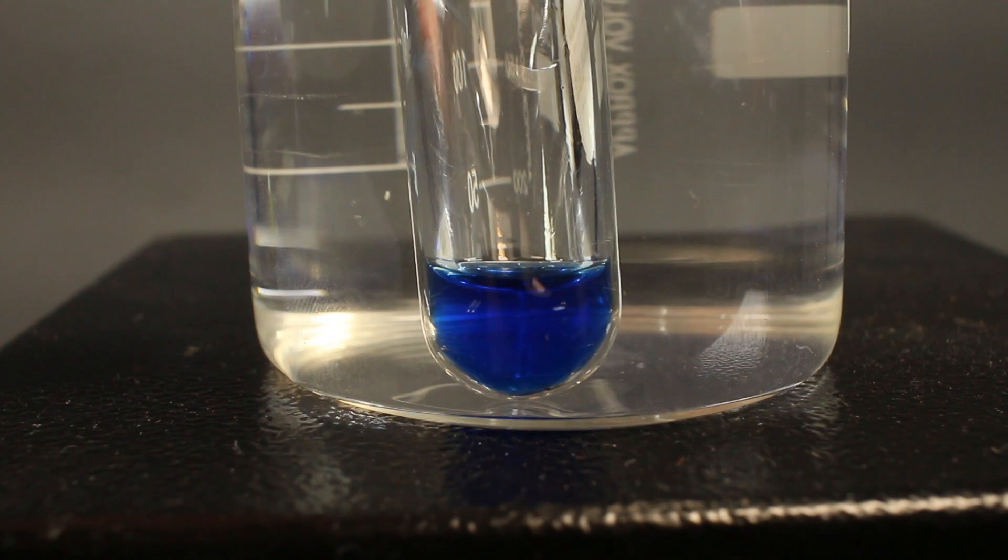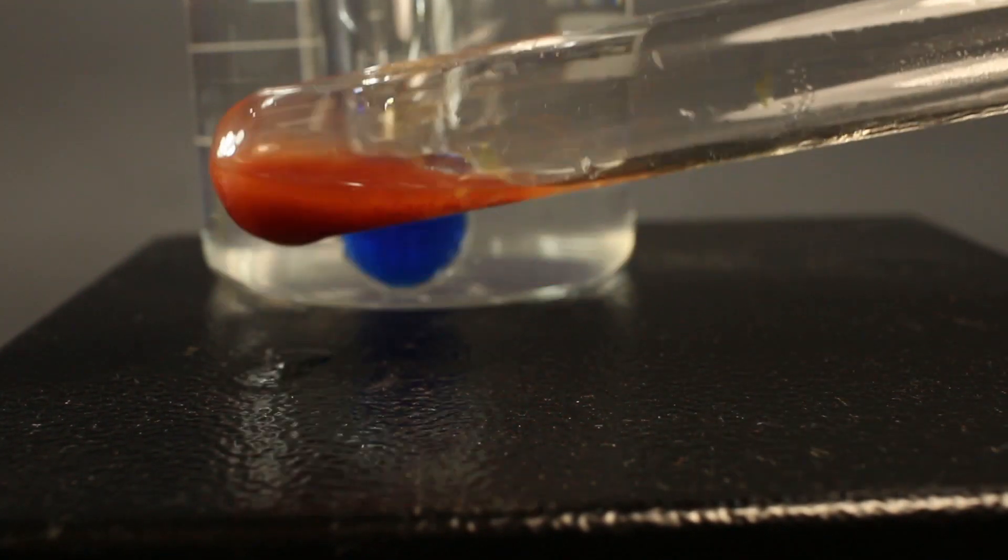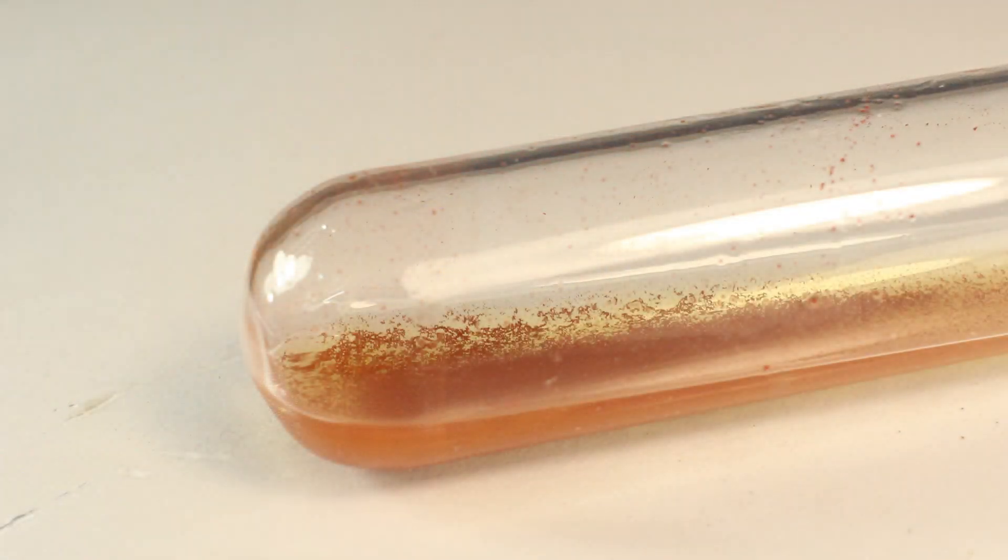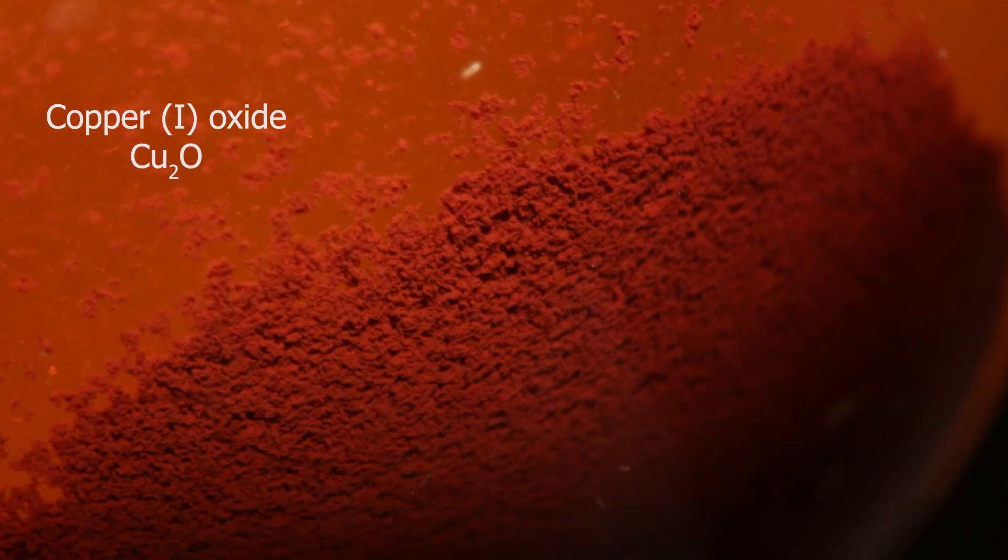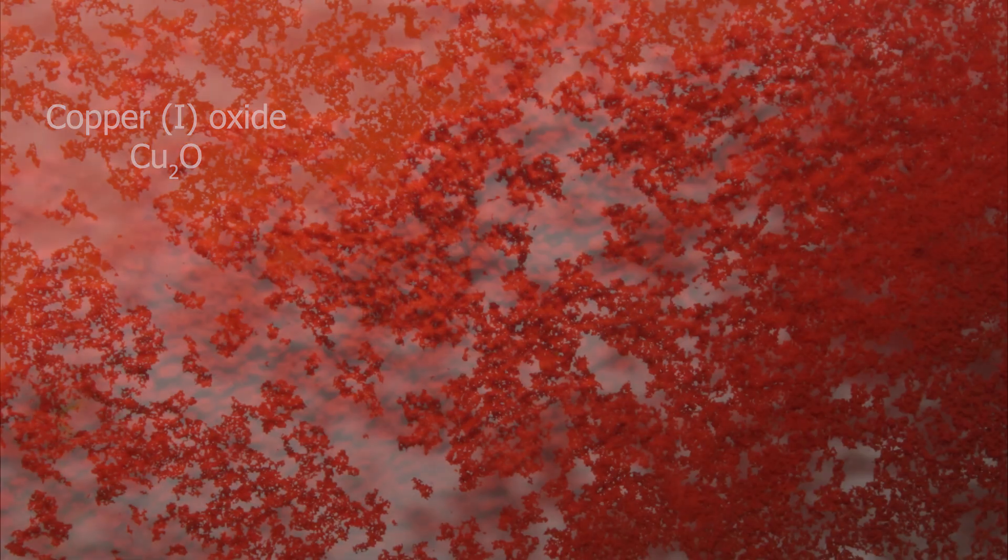So, here is the end result. Positive result for glucose. It can look brown just like that, depends on lighting, in fact, but here I'm proud of my red color of copper 1 oxide.